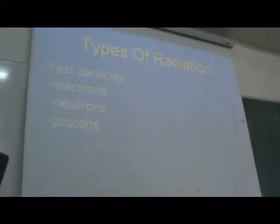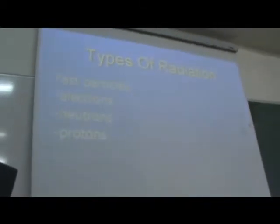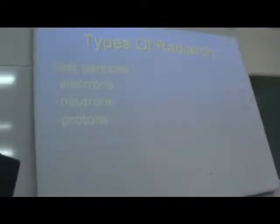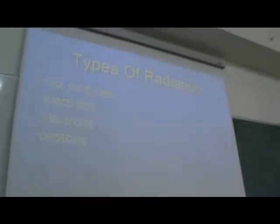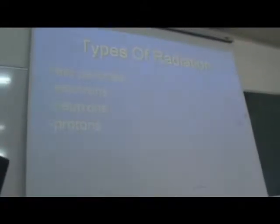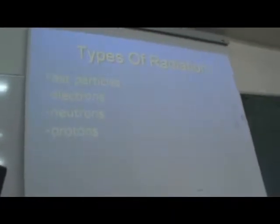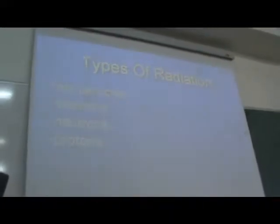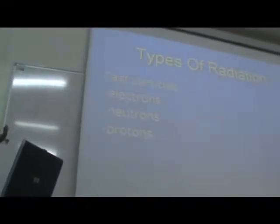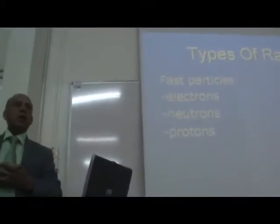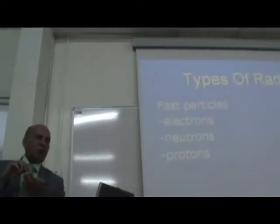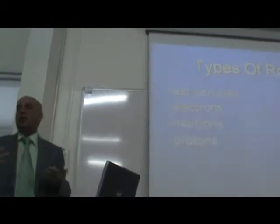Another source of radiation is fast particles of the atom: fast electrons, fast neutrons, and fast protons. The fast electron is still in common practice, though it doesn't penetrate deeply. We use electrons for superficial tumors — in the skin, for example — or sometimes in breast cancer to give field radiation to the breast area, sometimes as a booster dose to the tumor bed or scar.